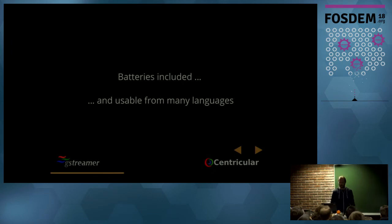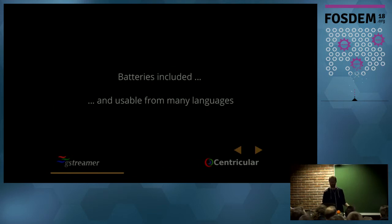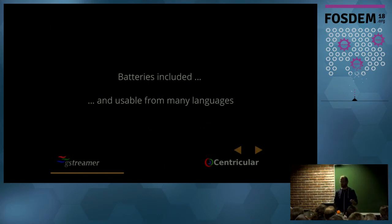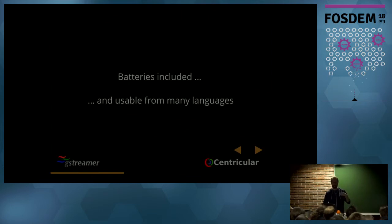GStreamer itself doesn't know anything about audio and video — everything is added via plugins, and we have a batteries-included philosophy. There are more than 250 plugins provided by GStreamer if you just get the source code and build it. There are plugins reusing existing libraries like FFMPEG and OpenCV, and plugins that allow you to use hardware codecs on embedded devices or to use cameras and similar things.